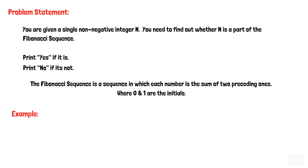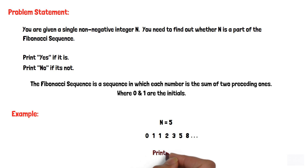Let's consider an example where n is equal to 5. The Fibonacci sequence starts with 0 and 1, then sums the two preceding elements: 0, 1, 0+1=1, 1+1=2, 2+1=3, 3+2=5, 5+3=8, and so on. Since n equals 5 and 5 is part of the Fibonacci series, our program should print yes.